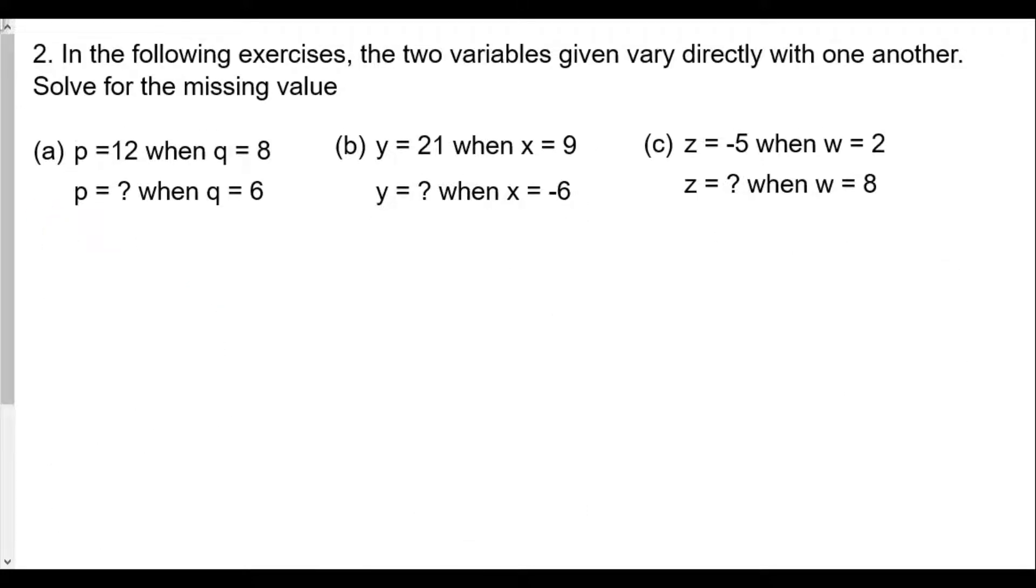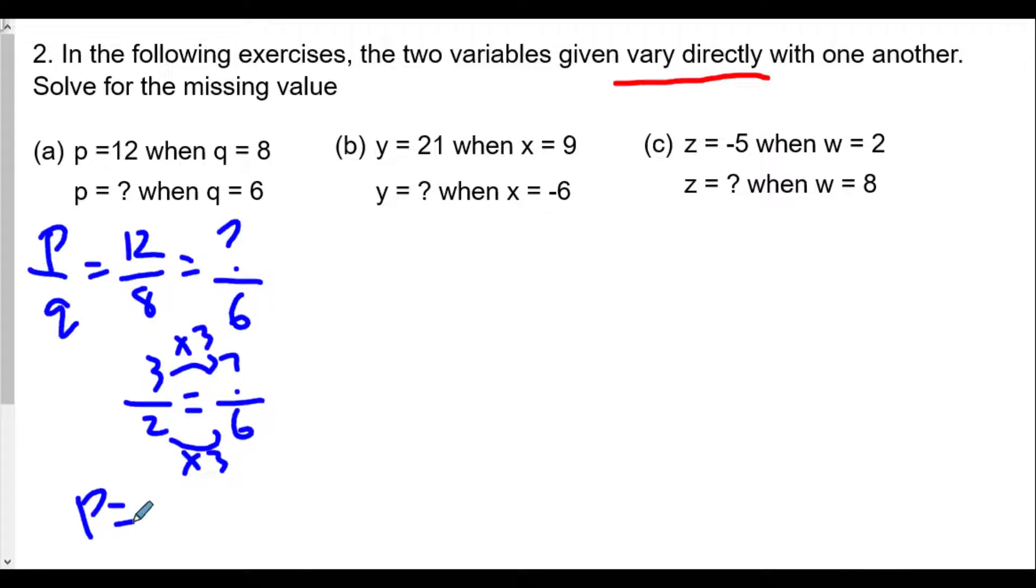Question number 2. In the following exercises the two variables given vary directly. Very important we see this. Vary directly means we're going to be setting up like a proportion, very similar to the last problem. So when p equals 12, q equals 8. So I have p over q is equal to 12 over 8. We want to find the value of p when q is 6. In the same manner we're going to simplify the fraction 12 over 8. We divide both 12 and 8 by 4 to get 3 over 2 equals the unknown value over 6. I multiply the denominator by 3, I'll multiply the numerator by 3. So the unknown value of p in this situation would be 9.